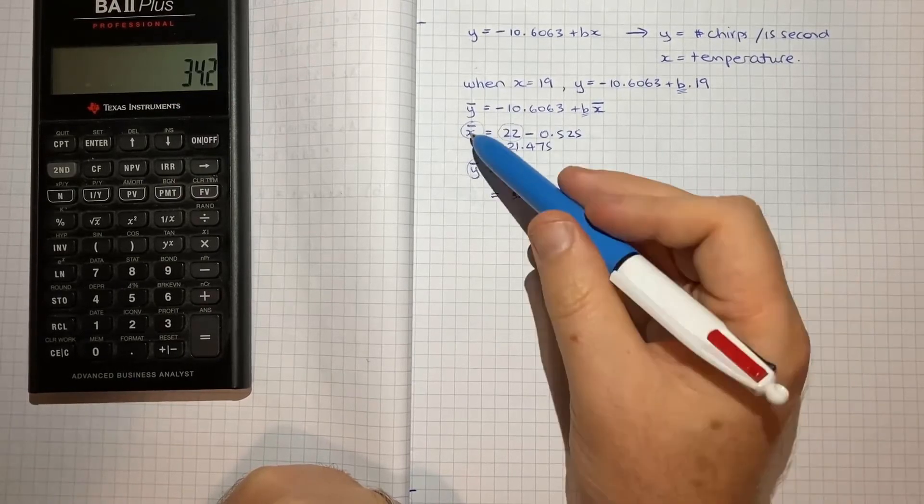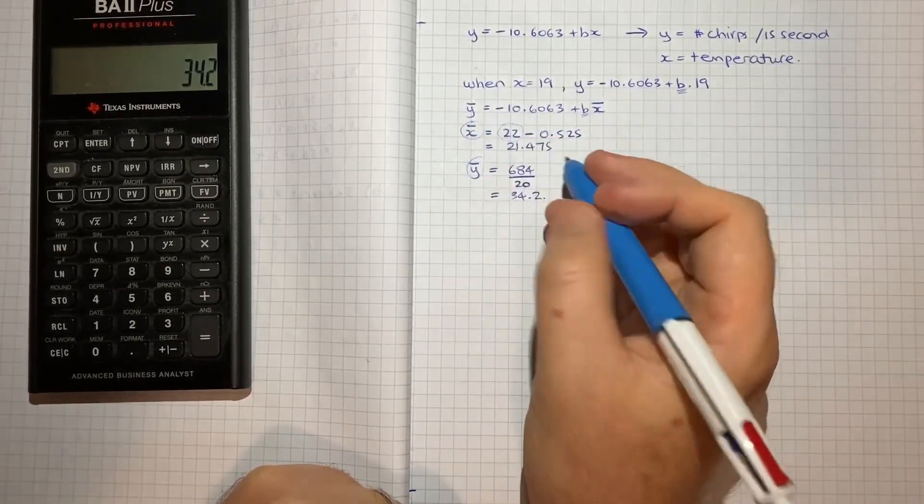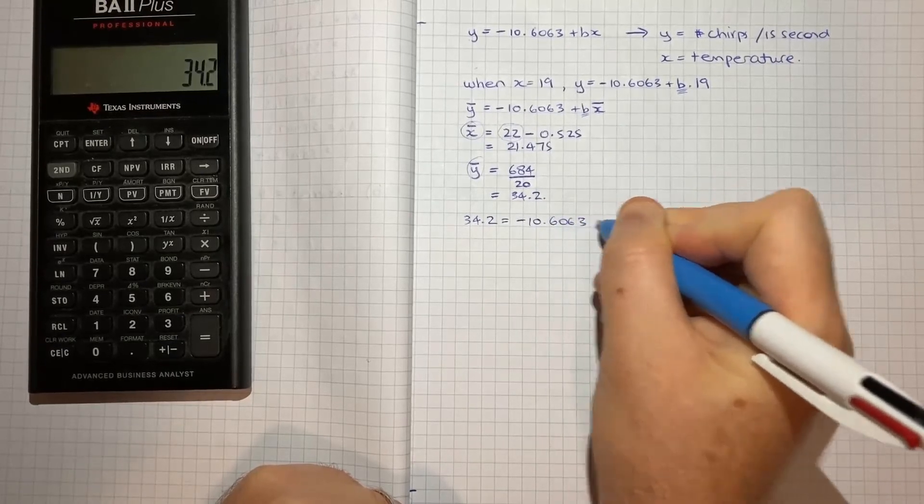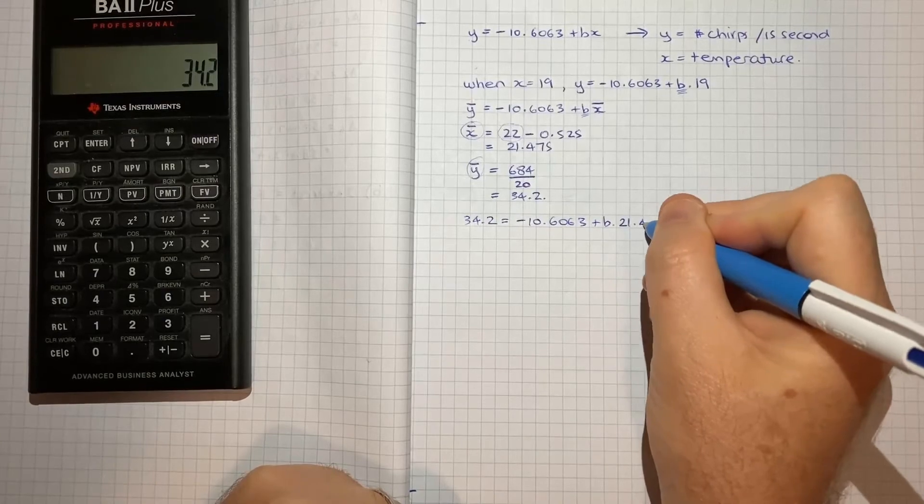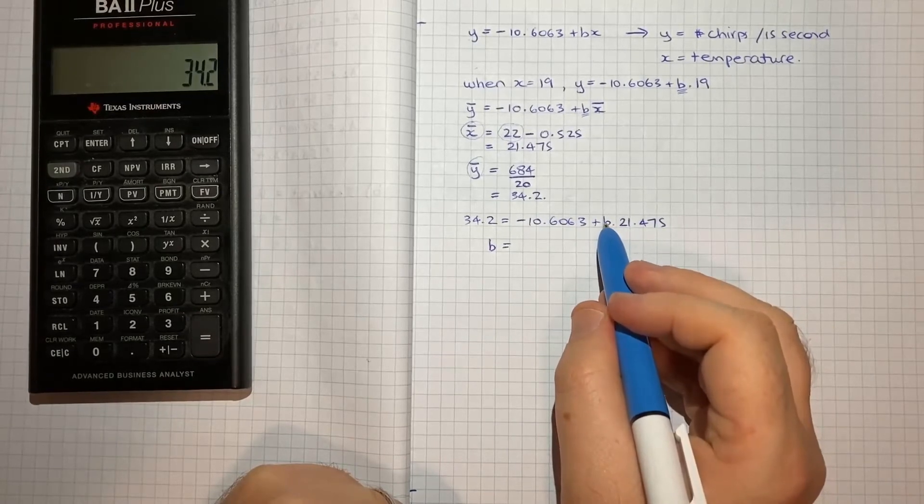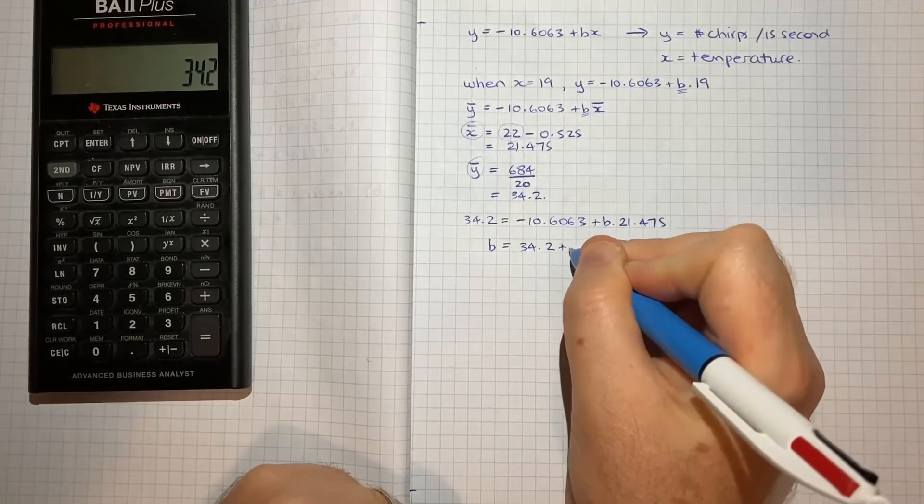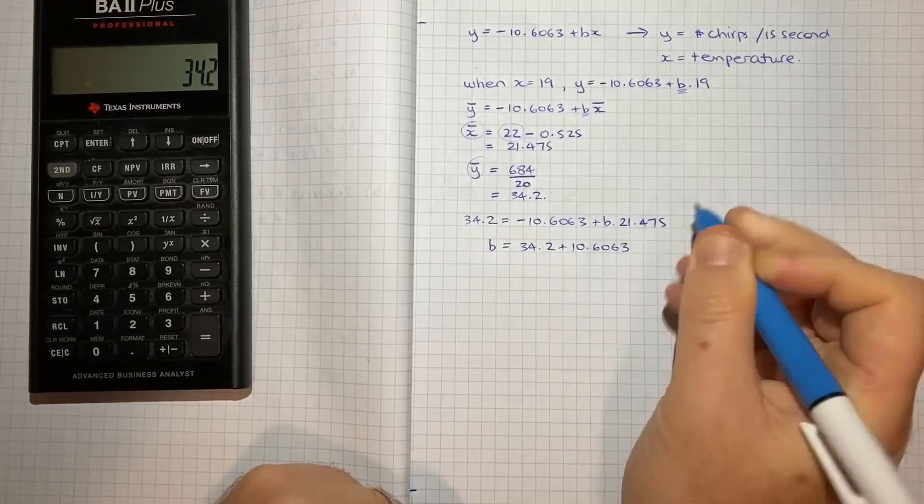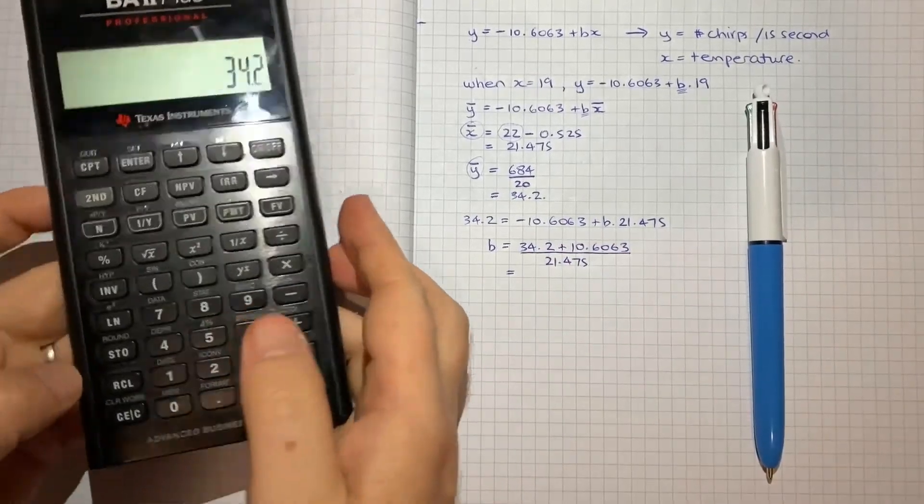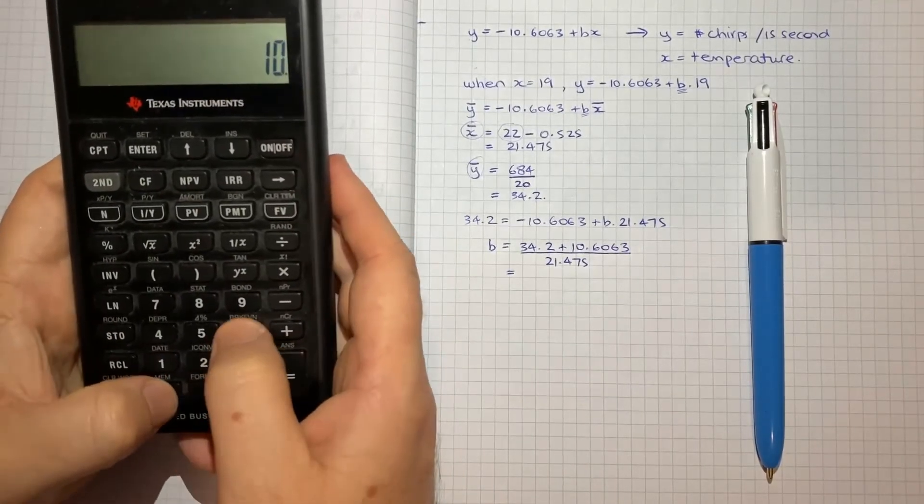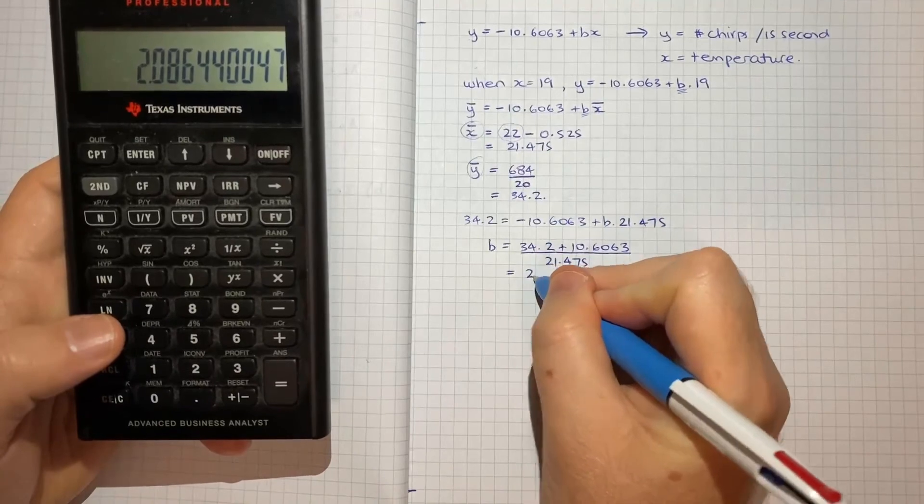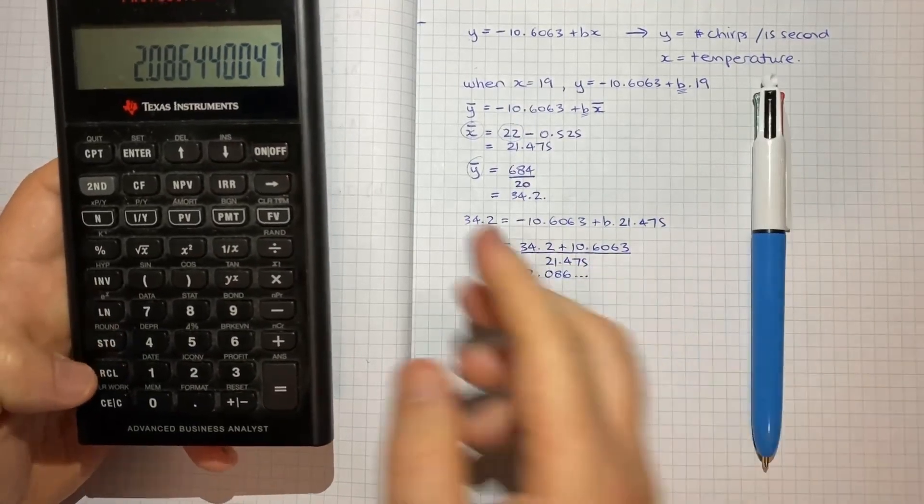So now that we have those two points, we can solve for B because we can say 34.2 is equal to negative 10.6063 plus B times 21.475. So B will be equal to the 34.2 plus the 10.6063 and all of that divided by the 21.475, which equals, key that in my calculator, so 34.2 plus 10.6063 divided by 21.475. So I get 2.086 and so on. So I'll just store that.